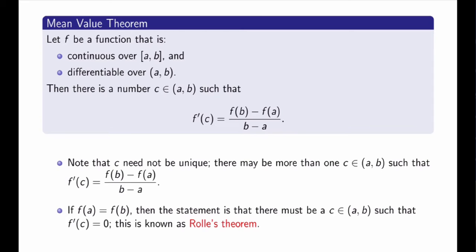Why does that reduce to the statement of the previous slide? The left-hand side calculates the slope of the tangent line at point c, while the right-hand side calculates the slope of the secant line. So indeed, this reduces to the statement that there exists a c such that the tangent line at c is parallel to the secant line between points a and b.